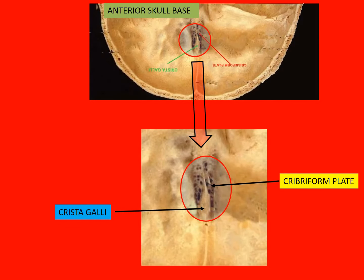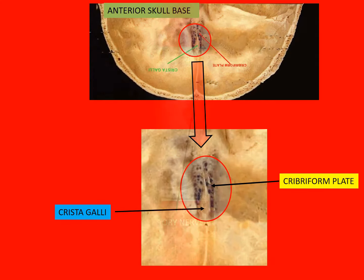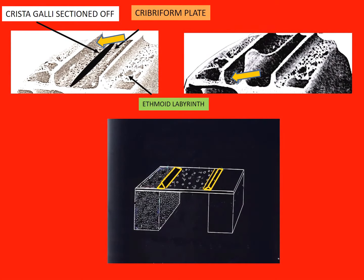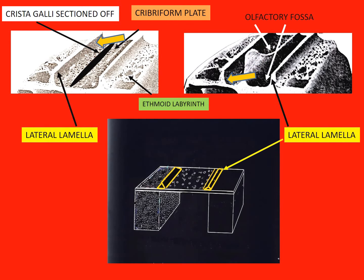This is a view of the anterior skull base to demonstrate the laminae cribrosae and the crista galli. The filaments of the olfactory nerve pass through the holes in the cribriform plate. The lateral edge of the olfactory fossa is raised vertically upwards and is called the lateral lamella. The height and width of the lateral lamella may vary considerably between individuals.